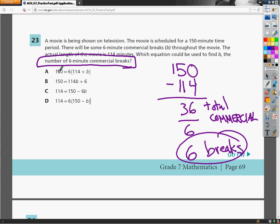So in A, they say 150 equals 6 times 114 plus B. So somehow we're going to take the run time of the movie and add the number of breaks and then multiply that whole thing by 6. That makes absolutely no sense. Why would we do that? Seems ridiculous.